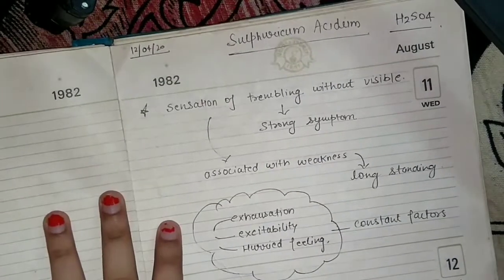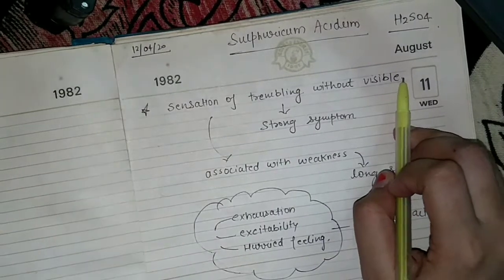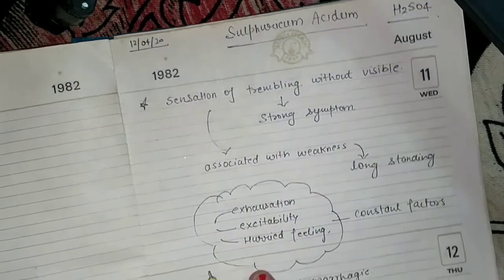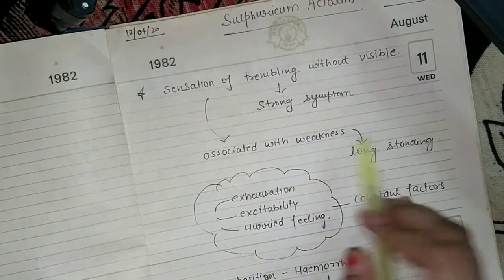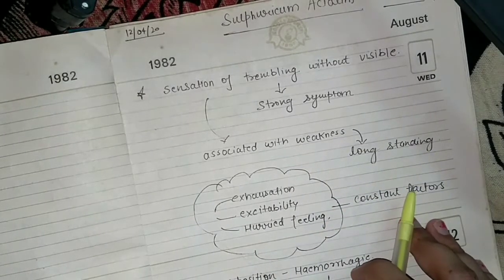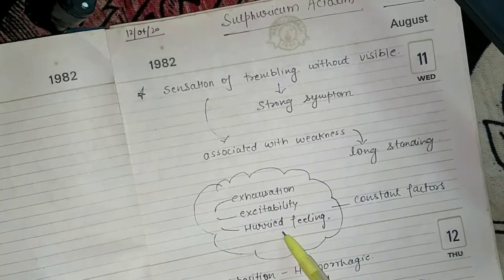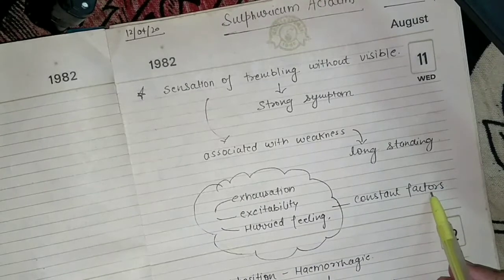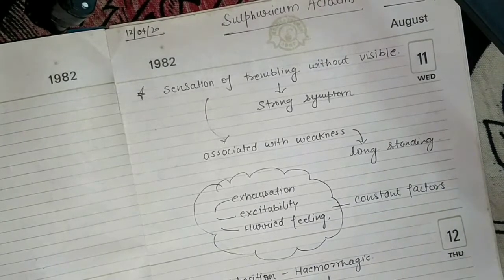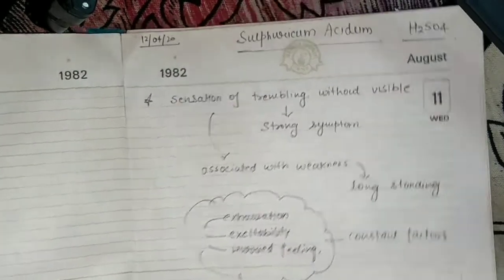The most important feature is the sensation of trembling without visible trembling — this is a strong symptom of Sulfuric Acid, associated with long-standing weakness. Exhaustion, excitability, and hurried feeling are constant factors in Sulfuric Acid. The patient has excitability and a hurried feeling.